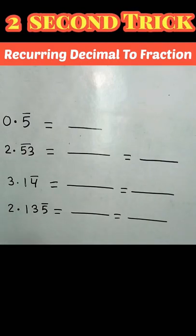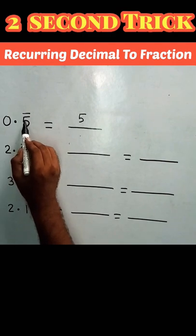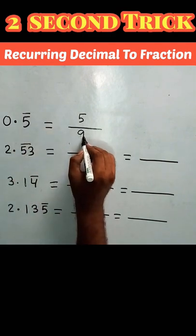In order to convert a recurring decimal into a fraction, the trick is very simple. First, you write the number which is given. Since a single digit has a bar, in the denominator you write 1 times 9.